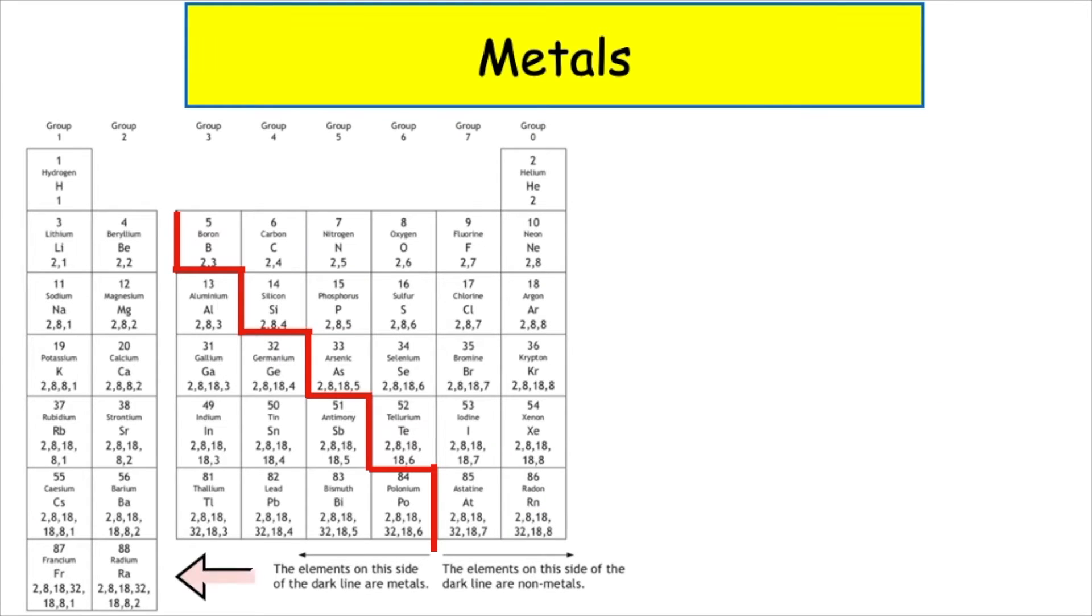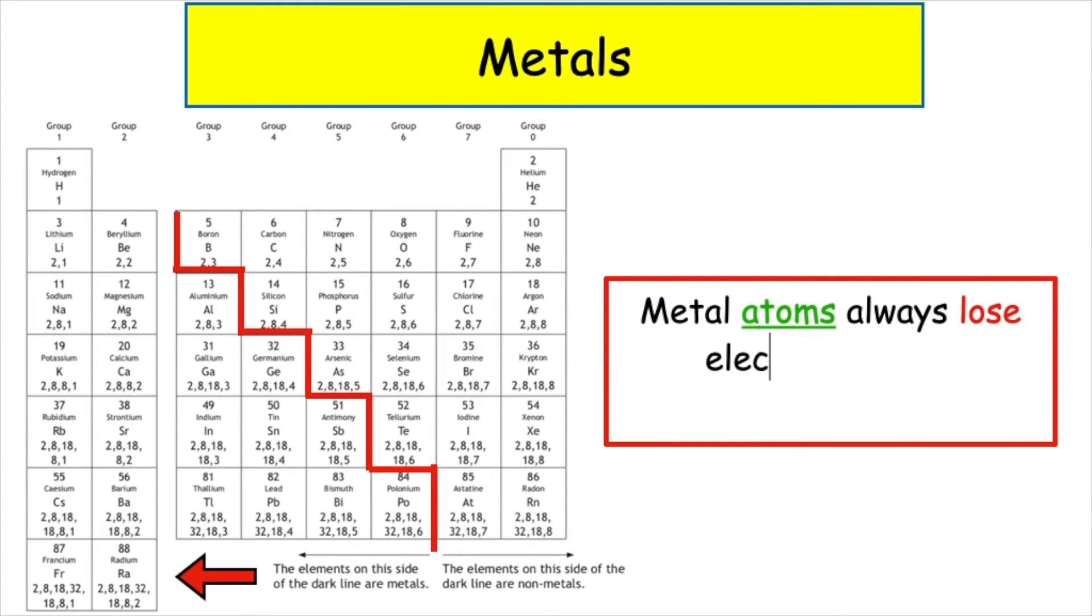Metal elements can be found on the left-hand side of the periodic table. Metal atoms always lose electrons to form positive ions.